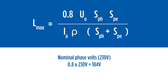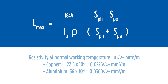This percentage gives a voltage value of 184 volts for working the equation. The Greek letter rho represents material resistivity at working temperatures, given in ohms per millimetre squared per metre, with values for copper and aluminium provided.